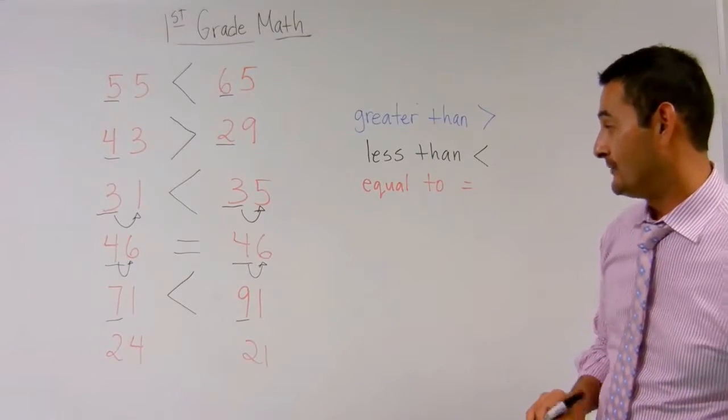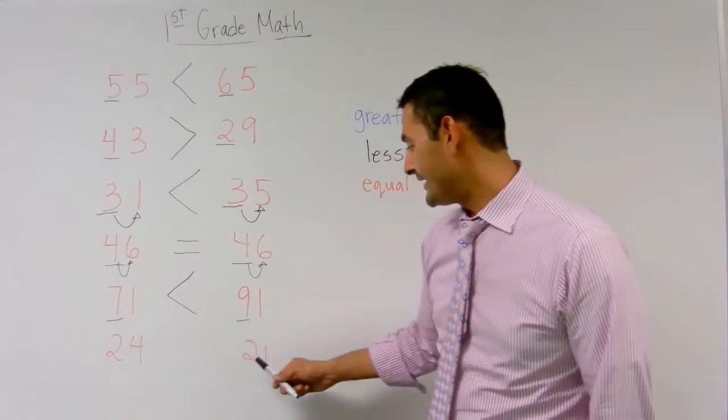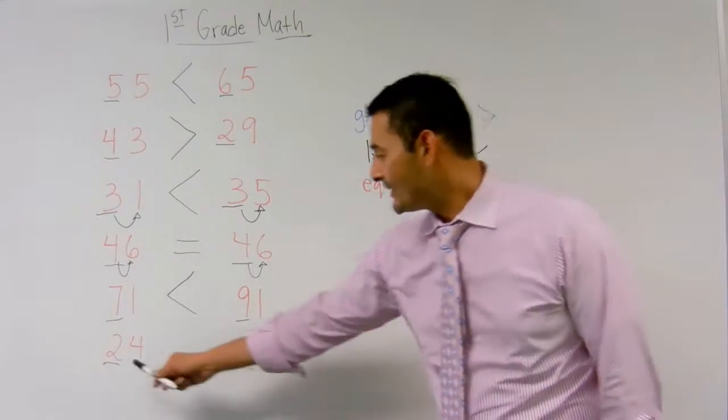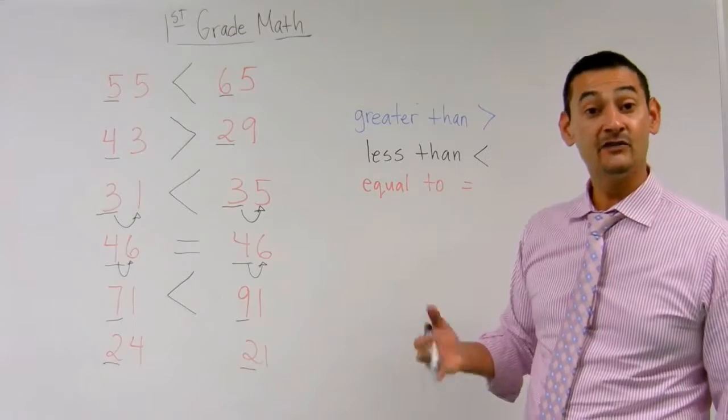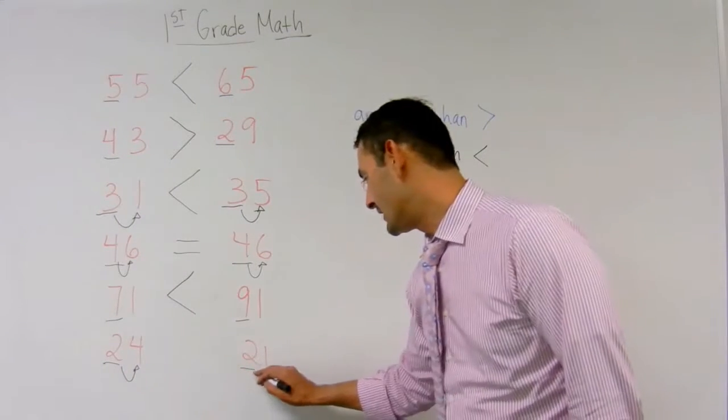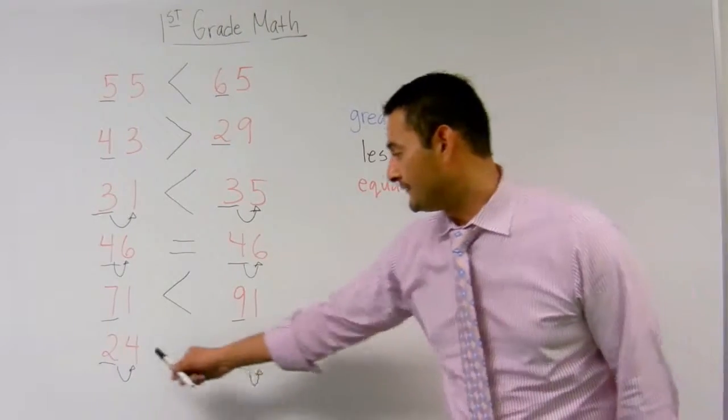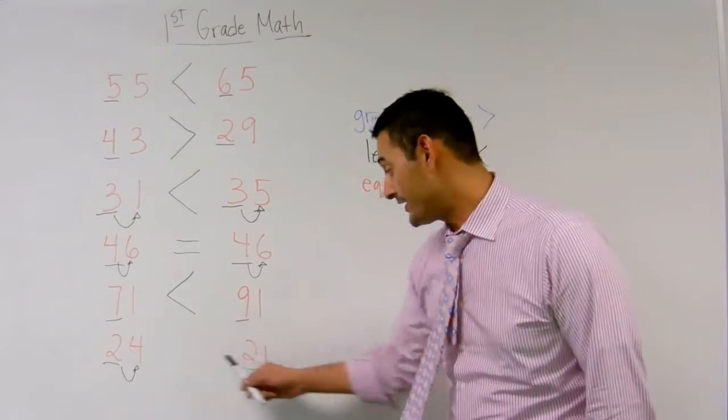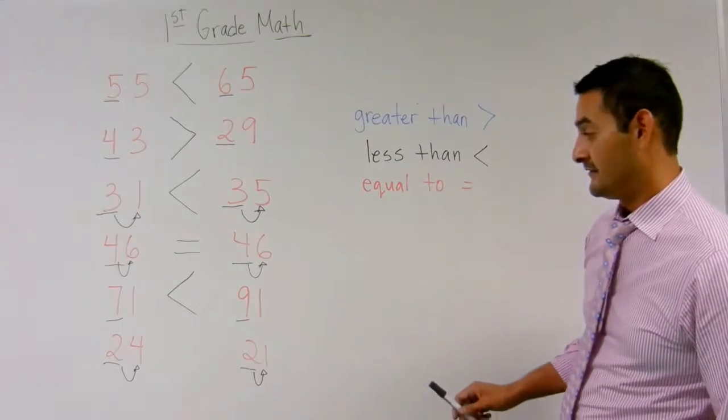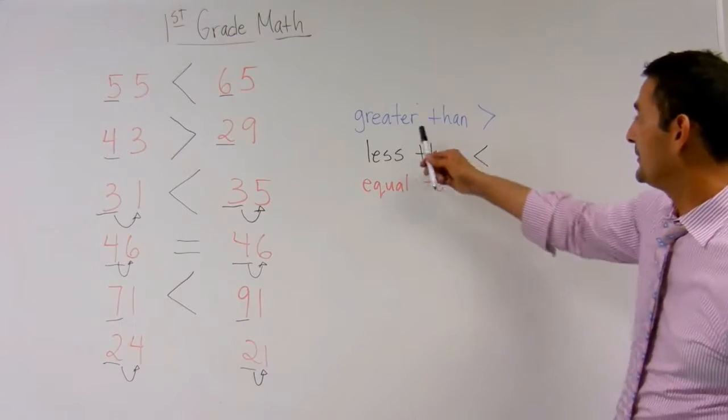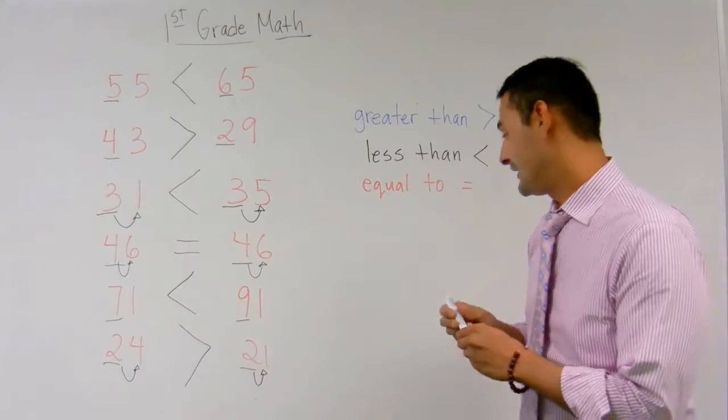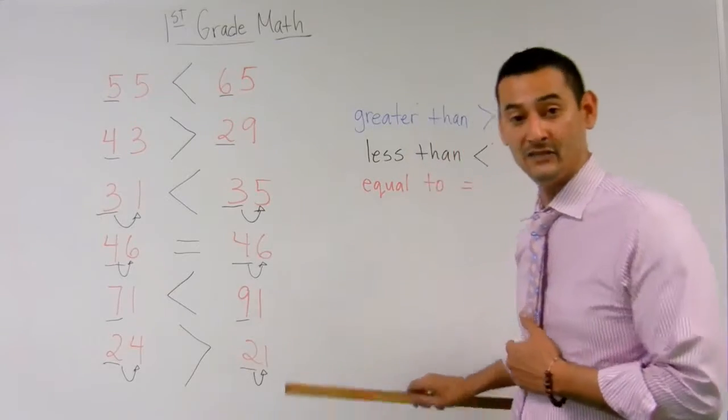And, we have one last example. Here, I've got 24 and 21. Let's look at the tenths place first. We have a 2 and a 2. Same number. So, what do I do? I go on to the ones place. Look at the ones place. Now, I've got a 4 and a 1. Is 4 greater than 1 or is it less than 1? 4 is bigger, right? Great. So, I'm going to use greater than. I'm going to use this symbol. And, there you go. So, now, let's go ahead and let's see how we would read these.